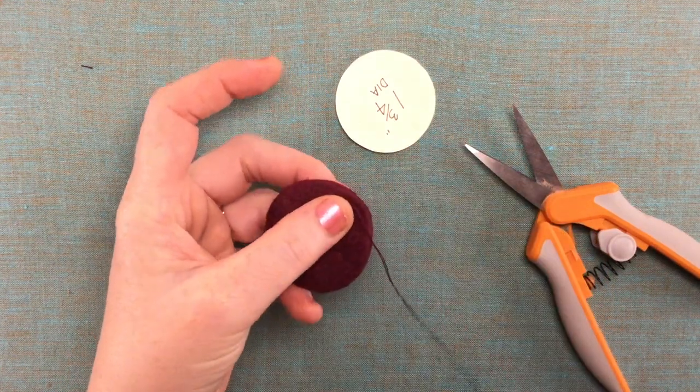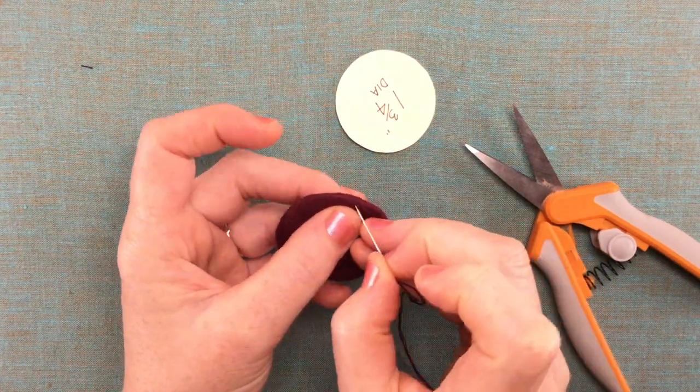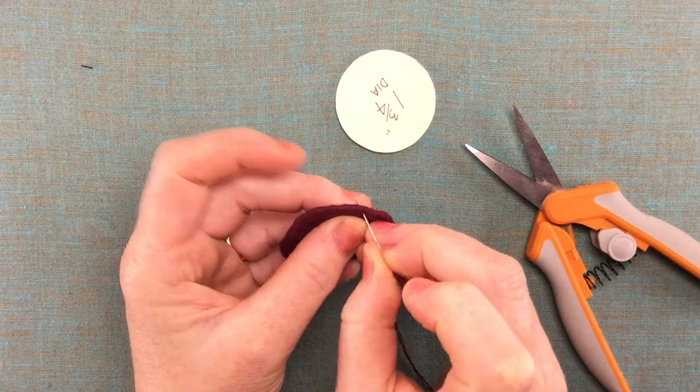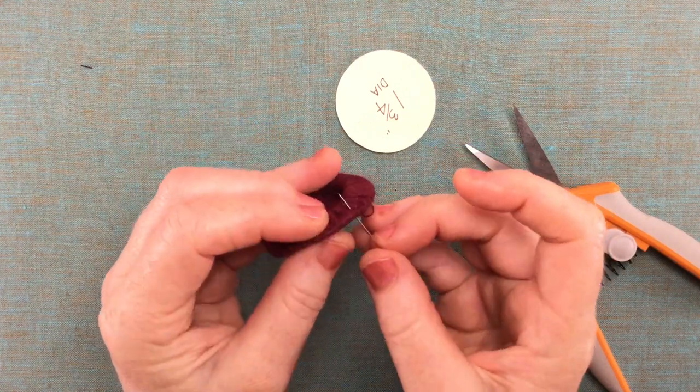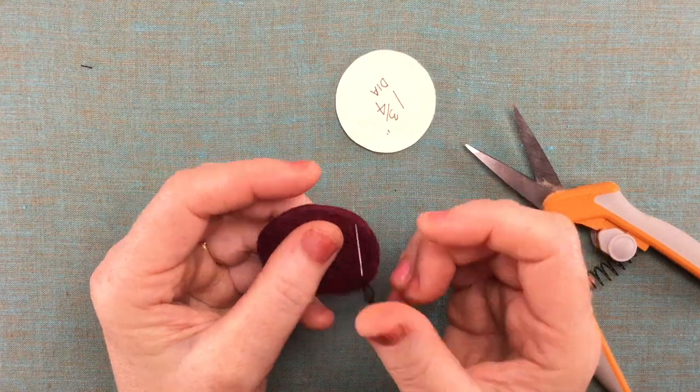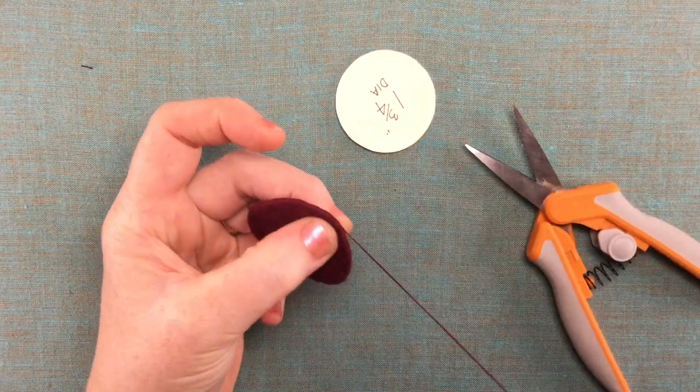So we're just going to go in and out from the top of the hat to the gathered side and go all the way around our little hat here.